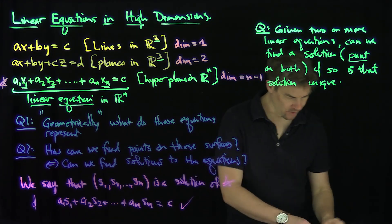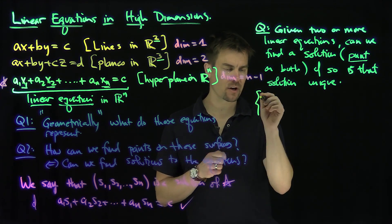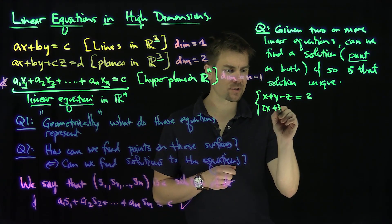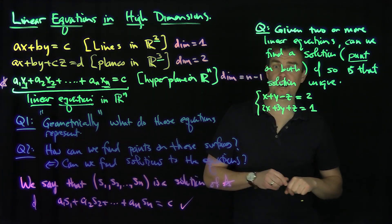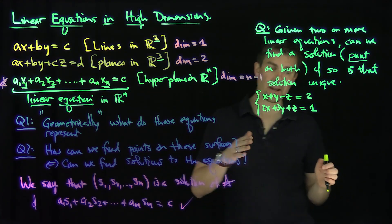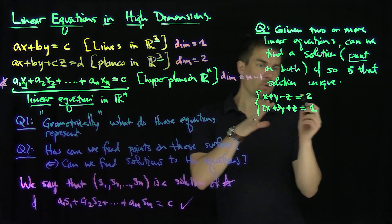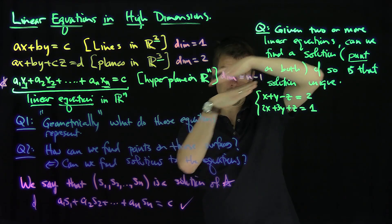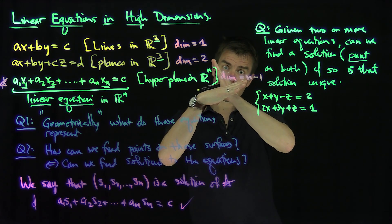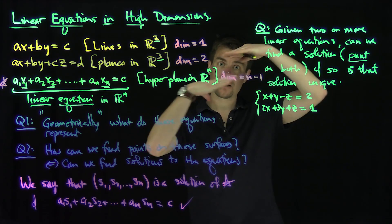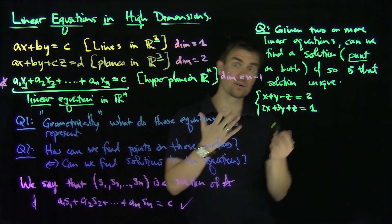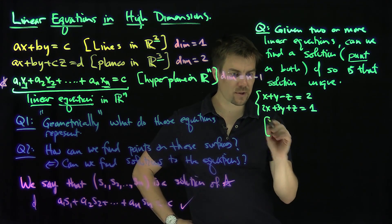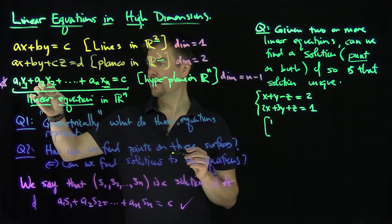Let me show an example. If I look at this system: x plus y minus z equals 2, and 2x plus 3y plus z equals 1, I have two planes in three-dimensional space. Two planes can be parallel — in which case there's no way to be on both simultaneously — or they could intersect in a line. I'm going to put this into a matrix and store the coefficients. The coefficients aj go in as: 1, 1, negative 1 | 2, and then 2, 3, 1 | 1.